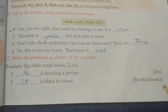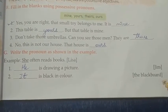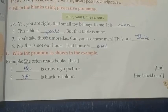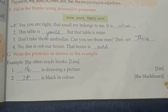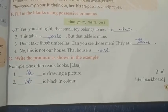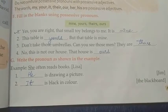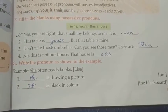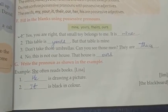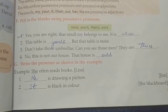Number three: Don't take those umbrellas. Can you see those men? They are theirs. Theirs means 'belonging to them.' As mentioned before, possessive pronouns show possession — what belongs to whom. Mine, yours, theirs are all examples.